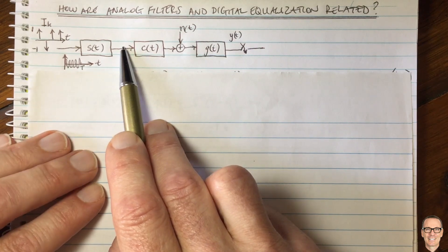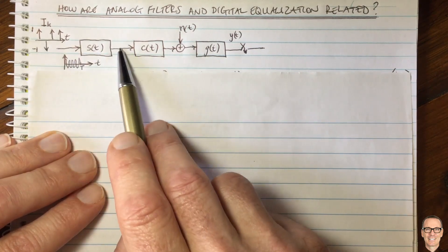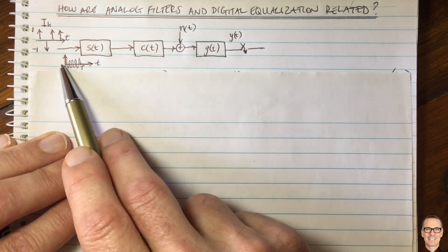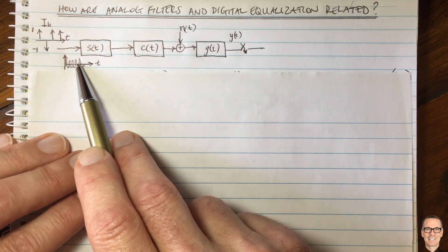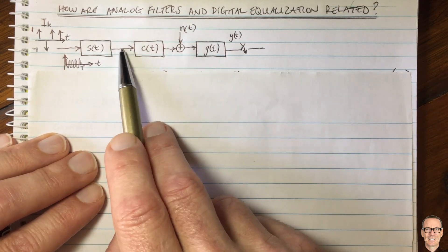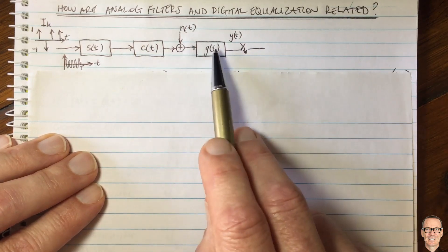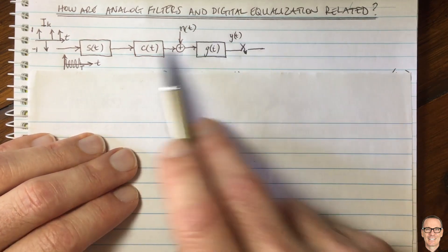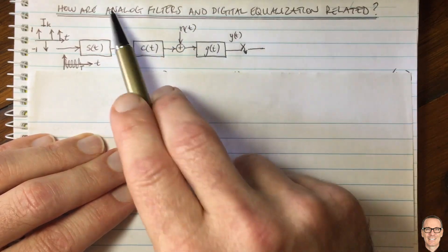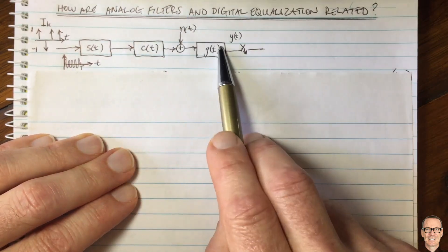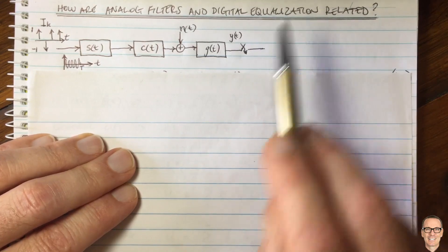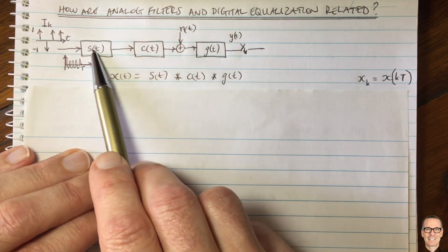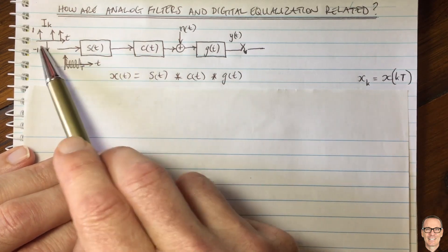I draw this picture because I always like to think about the waveform: it's an actual analog waveform. We're sending digital data but doing it with analog waveforms — in this case a cosine wave at a carrier frequency with either one phase or another. It's an analog signal going into an analog channel, and therefore at the receiver we need an analog filter to add up the energy before we sample it to decide on the digital data. It's really important we understand how these analog filters relate to the digital data and equalization.